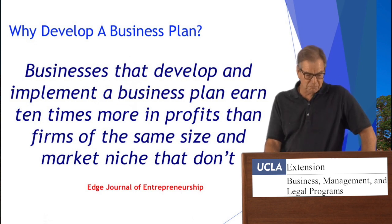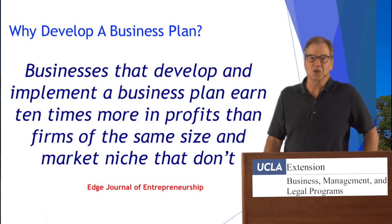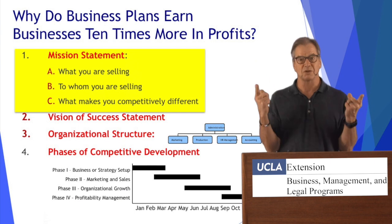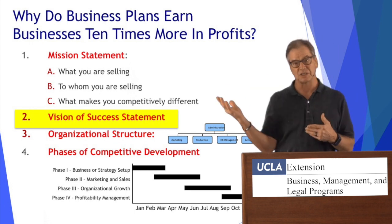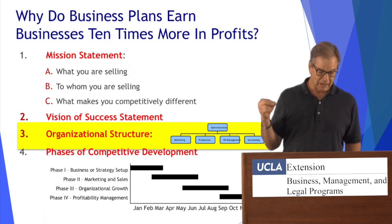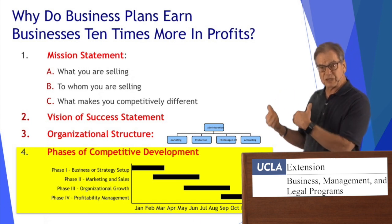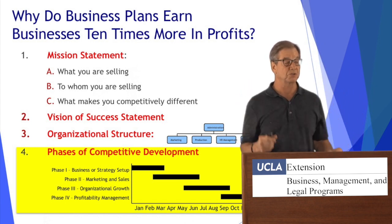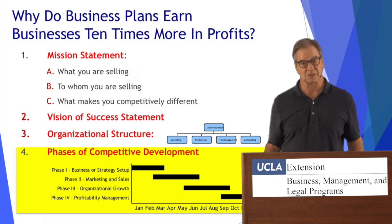Businesses that develop and implement a business plan earn ten times more in profit than firms that don't, for four basic reasons: one, there's a mission statement — the foundation of everything; two, there's a vision of success statement — we have some idea where we're going; three, there is organizational structure — division of labor leads to specialization, leads to increased output; and four, there are phases of competitive development — what are we going to do first, second, third to build the infrastructure to achieve the vision of success statement? This is one of the critical components of success of the entire entrepreneurship, new venture formation, strategic business plan development process.